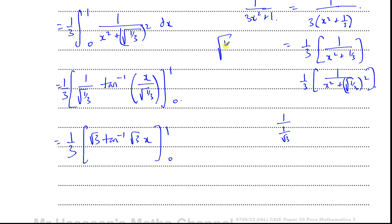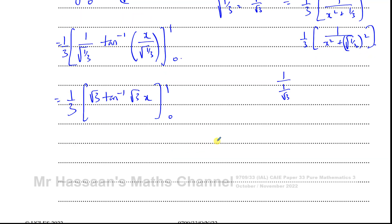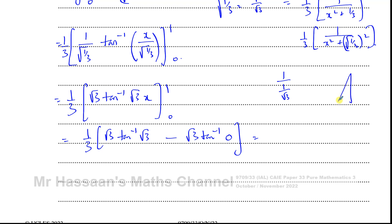Evaluating the limits: putting x = 1 gives arctan(√3), and putting x = 0 gives arctan(0) = 0. From our triangle — opposite √3, hypotenuse 2, adjacent 1 — arctan(√3) = π/3 (60°). So the result is (1/3) · √3 · π/3 = π√3/9.